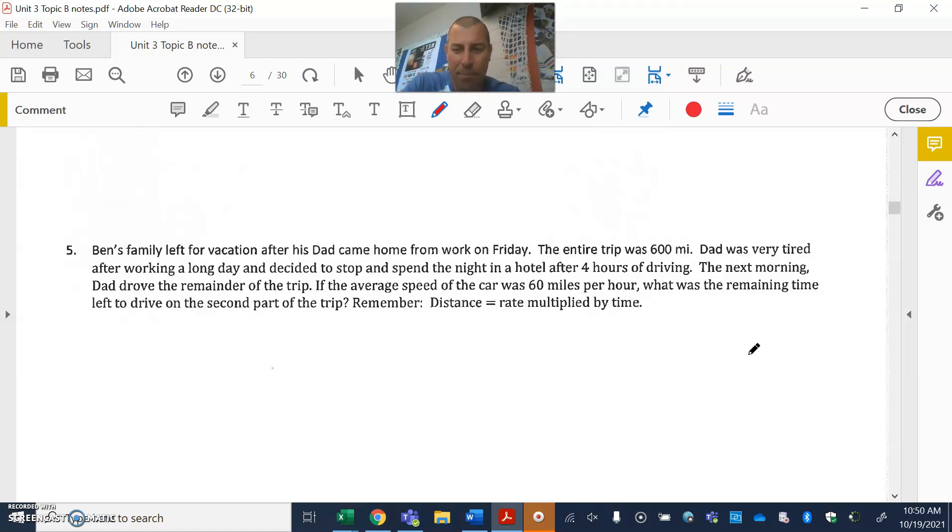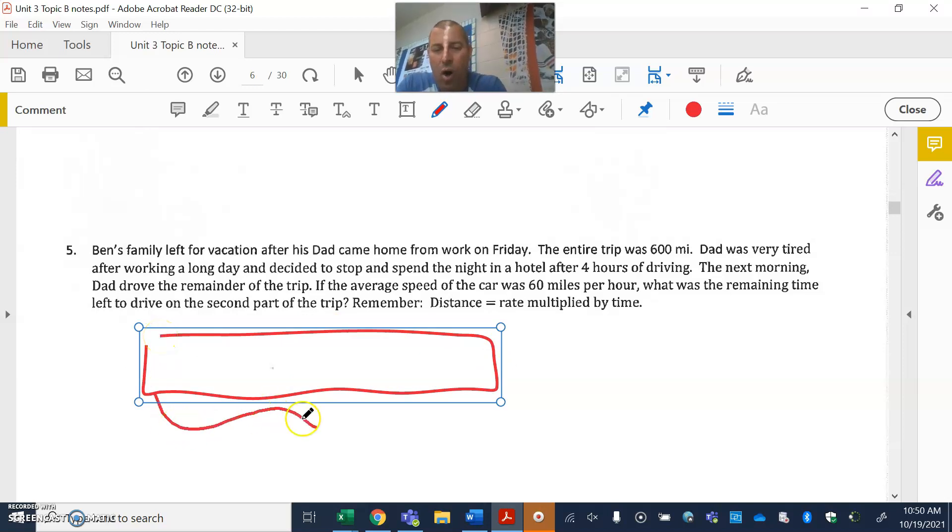The next morning, dad drove the remainder of the trip. If the average speed of the car was 60 miles per hour, what was the remaining time left to drive on the second part of the trip? Remember, distance is rate multiplied by time. Sometimes we've got to do a little bit off to the side to get to our equation.